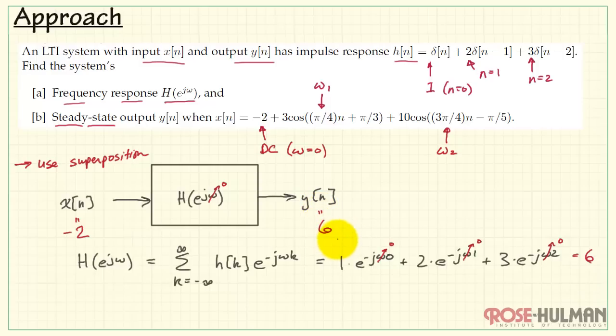That would tell us that the output is the system response at DC, which is 6, times the DC input, which is minus 2. And that would give us a result of minus 12.